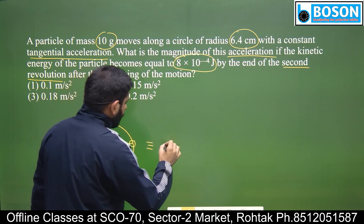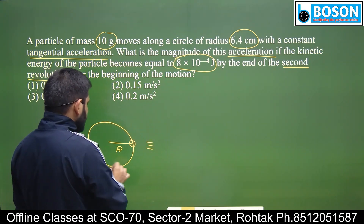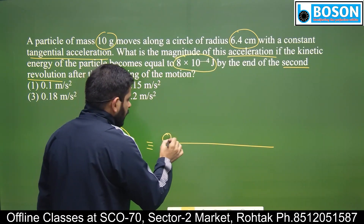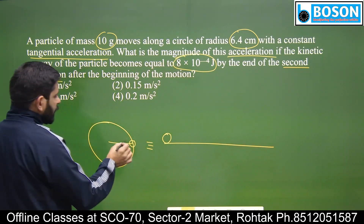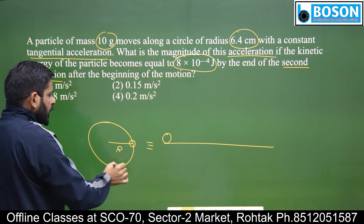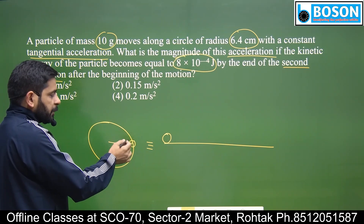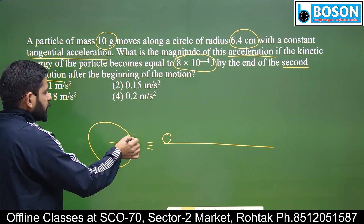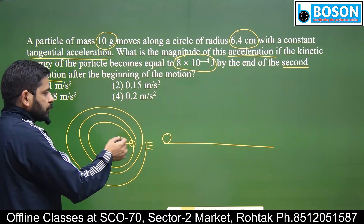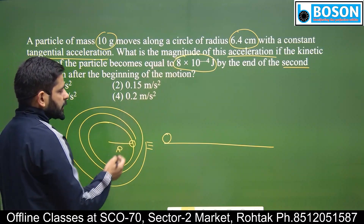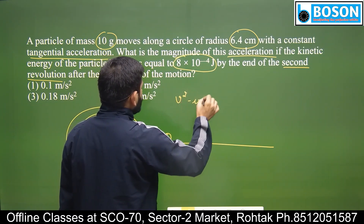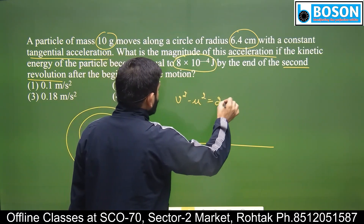अगर यह constant tangential acceleration है, तो particle यहां से rest से start किया है और लगातार accelerate करता हुआ अपनी velocity को बढ़ा रहा है। यह लगातार tangentially constant acceleration से आगे बढ़ रहा है। तो मैं यहां पे equation यूज़ कर सकता हूं: V² - U² = 2As।